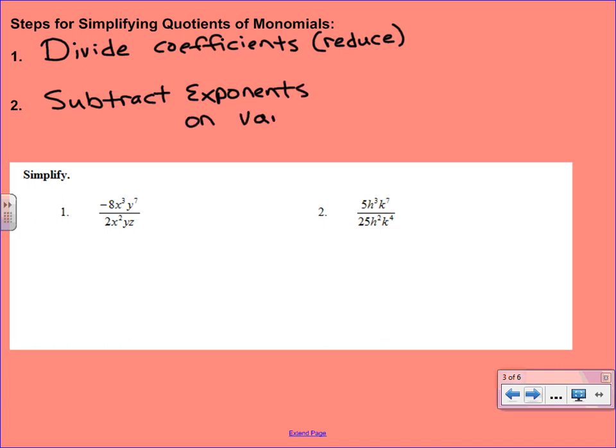Now if you think back to when we were multiplying, what we did is we totally regrouped the problem. So we separated out the coefficients and all of the like variables. We are going to do the same thing for these problems. So we're basically going to split this problem up. We're going to write -8 over 2, and then we're going to do x^3 over x^2, and then y^7 over y^1.